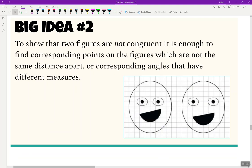Big idea number two, to show that two figures are not congruent, it is enough to find corresponding points on the figures which are not the same distance apart or corresponding angles that have different measures. Basically it's saying, as long as you can find one set of corresponding parts that are not congruent, it is enough information. Only one thing can be wrong or not match for them not to be congruent. Please go ahead and pause this video until everyone's finished and then resume.